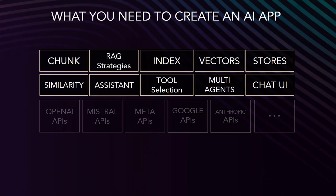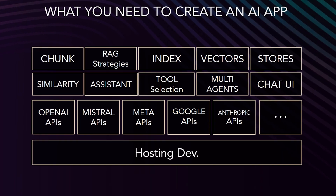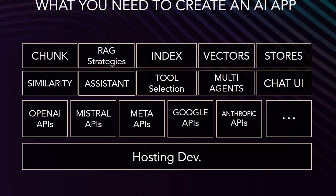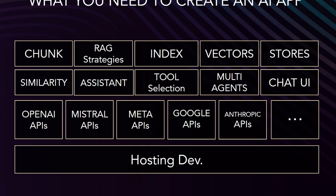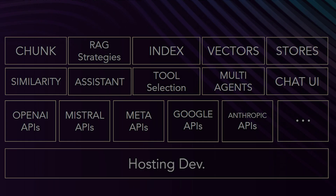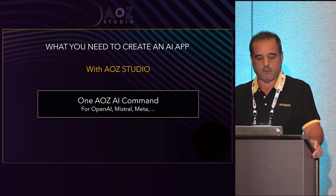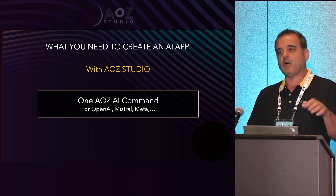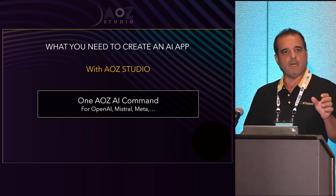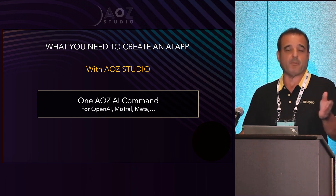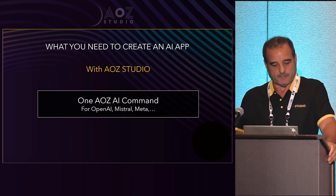Before jumping into the demo, I want to talk about another key EOSI Studio feature. To create an AI-driven app normally requires thousands of lines of code — the RAG, the chunking, the vectorization, etc. — quite complex programming. EOSI Studio revolutionized that too. You can do all of that with one single command, which is AI. With one single command you activate and use your chosen LLM, and you can switch from one LLM to another by simply saying OpenAI, Mistral, or Llama. We believe this will become more and more important as large language models become commodities.